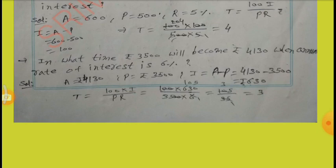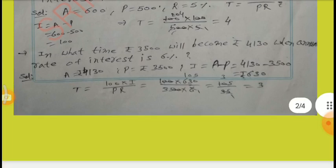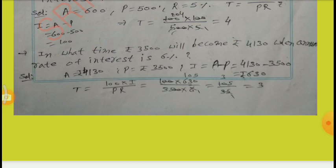In what time will Rs.3,500 become Rs.4,130 at a rate of interest of 6%? Here, A equal to 4,130, P equal to 3,500. We find I equal to A minus P equal to Rs.630. By the formula T equal to 100 into I by PR, by simplification we get T equal to 3 years.